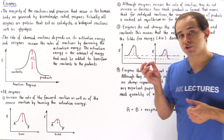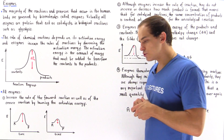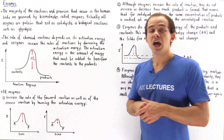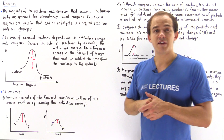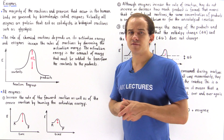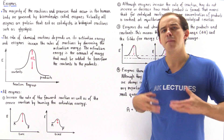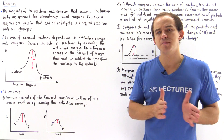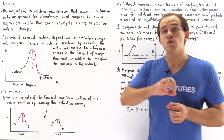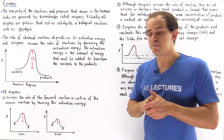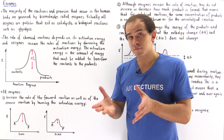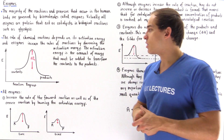Enzymes increase the speed of reactions by decreasing the activation energy of that reaction. The activation energy is the amount of energy that must be inputted into our reaction to overcome that energy barrier, to basically reach the transition state and transform the reactants to the product.